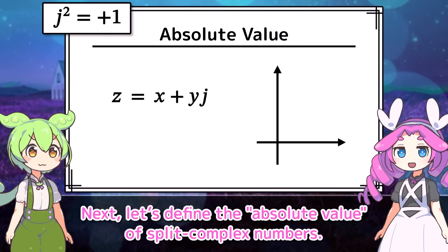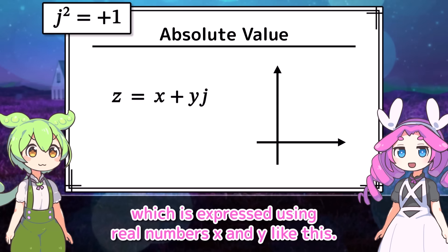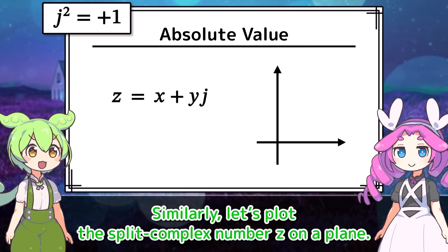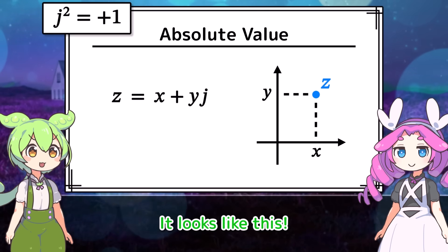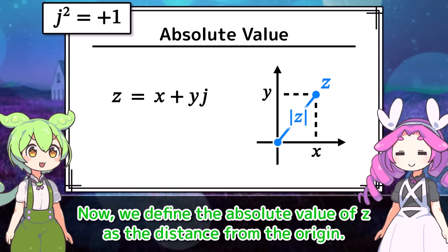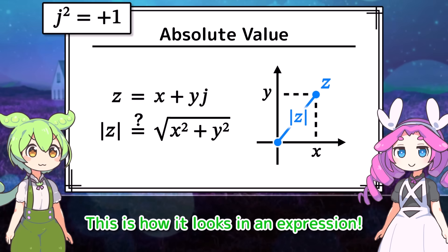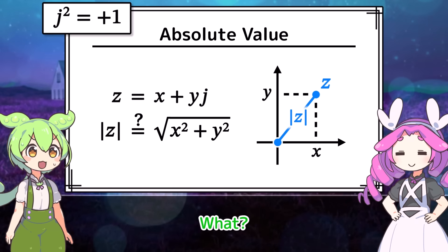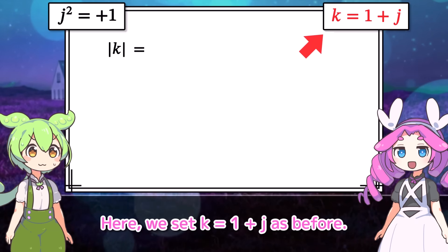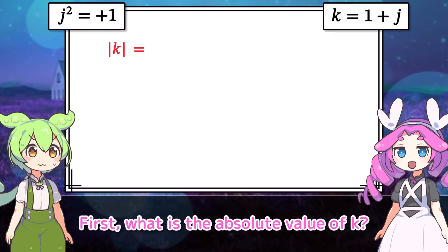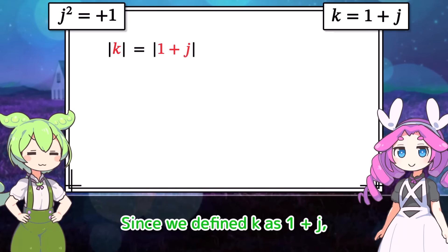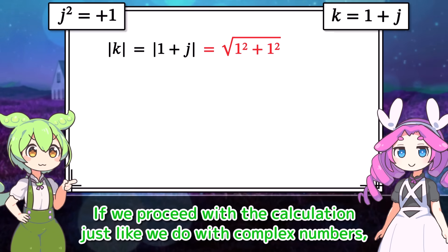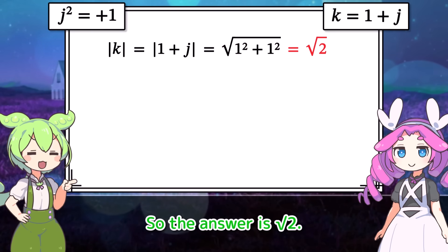Let's define the absolute value of split complex numbers. We consider a split complex number Z expressed using real numbers X and Y. Complex numbers can be plotted on a plane; similarly, let's plot the split complex number Z on a plane. We define the absolute value of Z as the distance from the origin. Calculating the absolute value of k equals 1 plus j the same way as complex numbers gives the square root of 2.